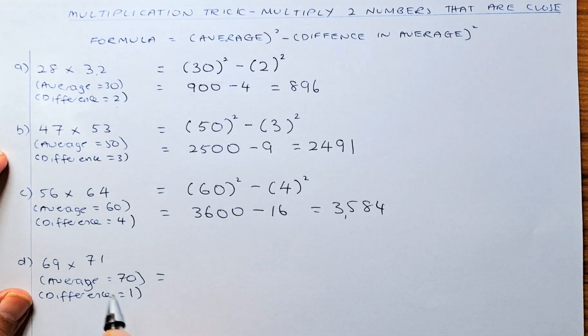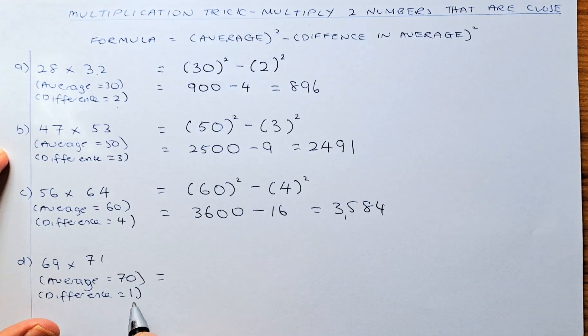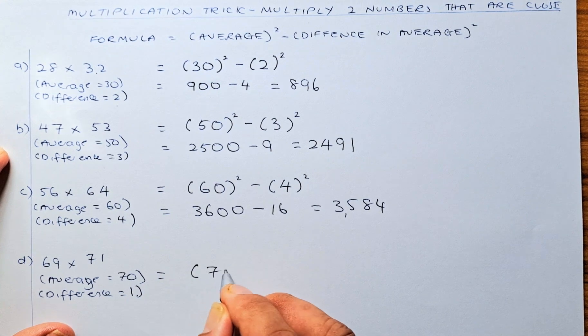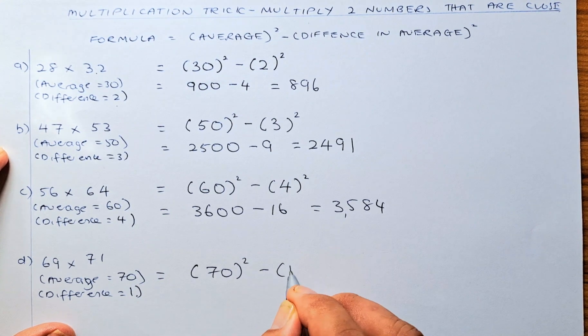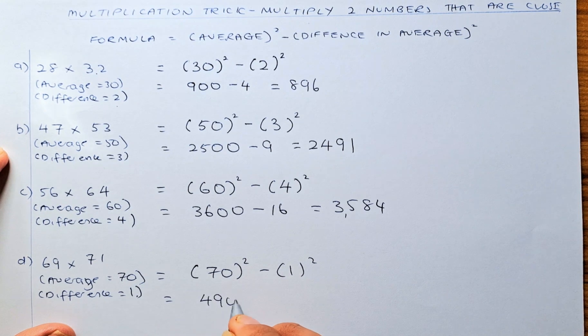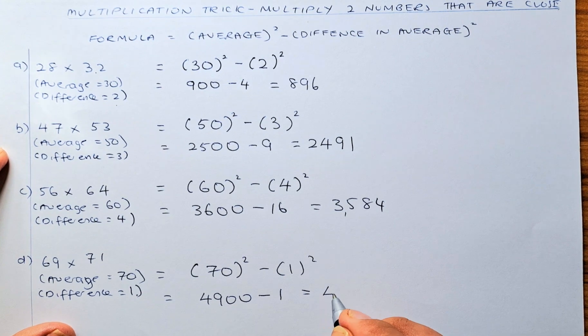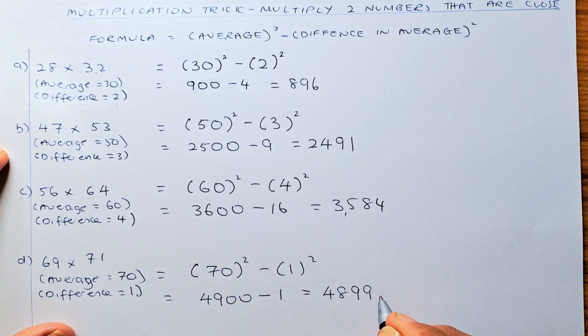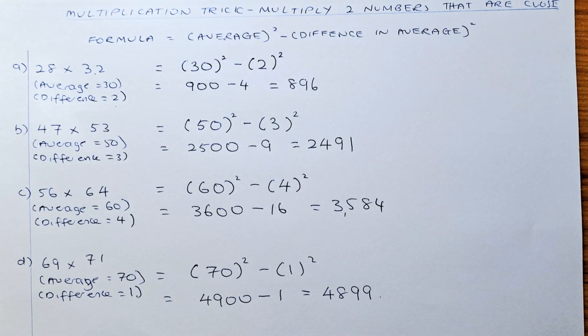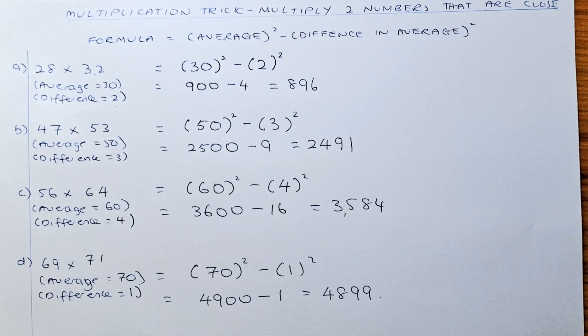The average is 70 because 71 is 1 more than 70 and 69 is 1 less than 70. The difference is 1. So the formula is 70 squared minus 1 squared, which gives you 4,900 minus 1, and the answer is 4,899. So technically this is an awesome trick to learn and you should be able to do this in your head without a calculator. Cheers everyone and see you soon.